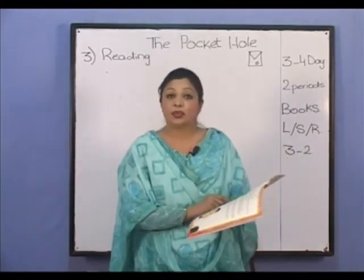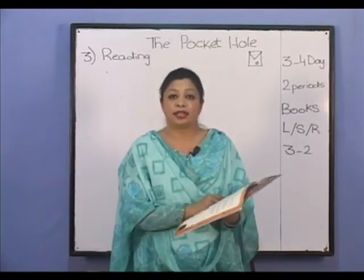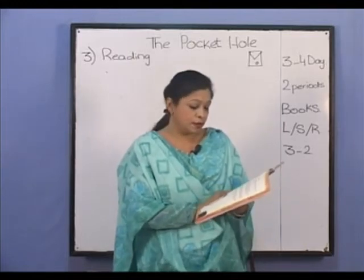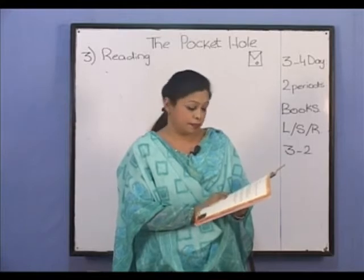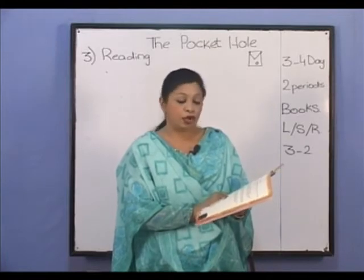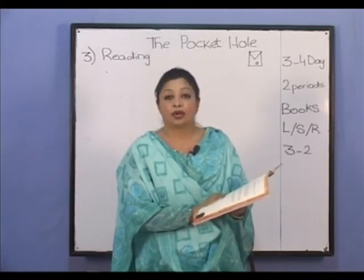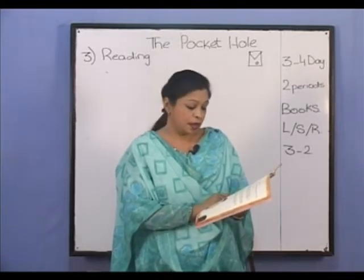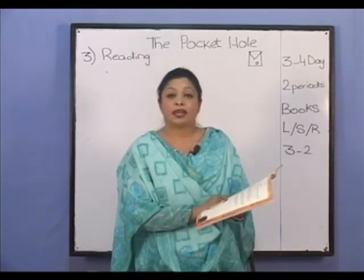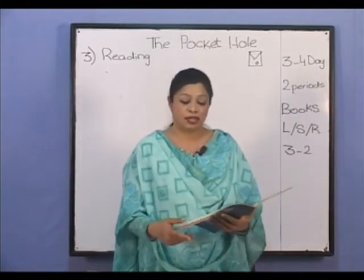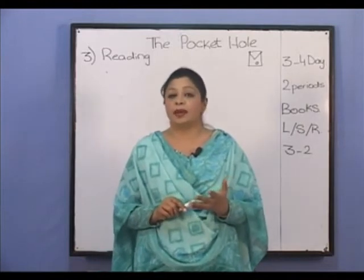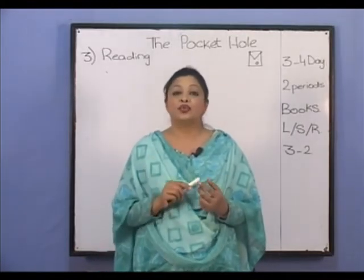After completing one sentence word by word, you then read the whole sentence using the three-two method: 'It was a mud dog... It was a mud dog... It was a mud dog.' In the same way, you do word-to-word reading first, then the whole sentence by three-two. Then you pick students from your class to read the same sentence.